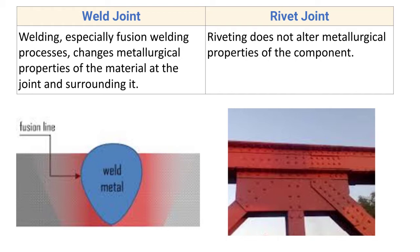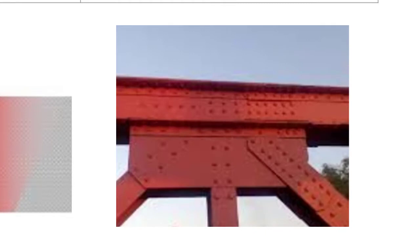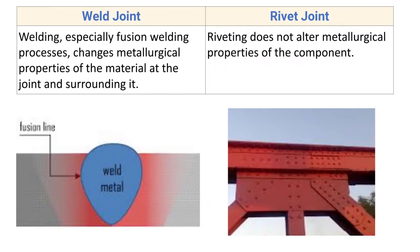In case of rivet joint, riveting does not alter the metallurgical properties of the component. In riveting, the metal is not heated to an elevated temperature, and thus no metallurgical changes occur.